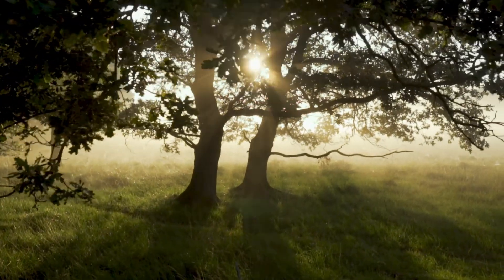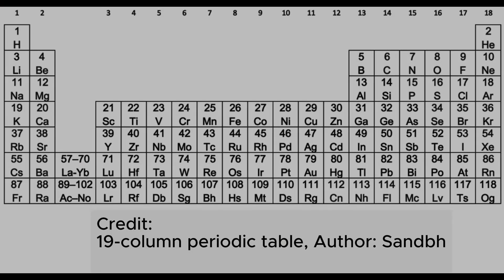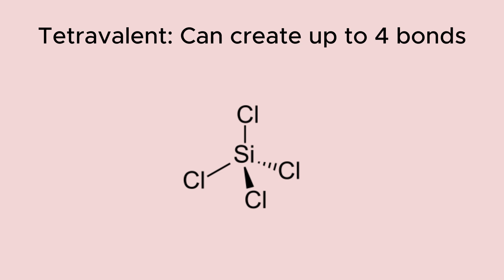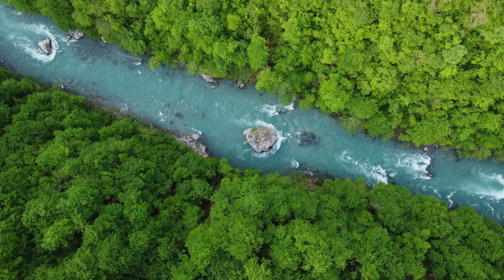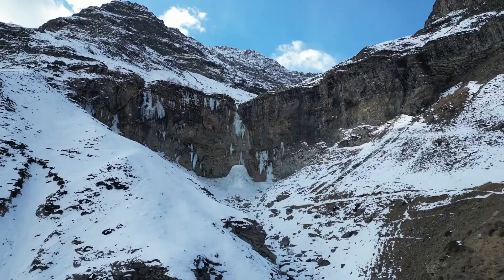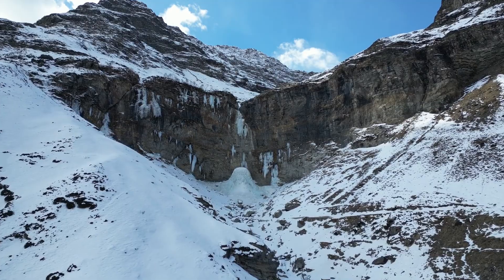Silicon has for decades been considered a serious alternative to carbon for life. One of the main reasons is that silicon belongs to the same group as carbon in the periodic table, and therefore they share several properties. One of the most important is that it is tetravalent, meaning each silicon atom can create up to four bonds to other molecules. This should allow silicon to create the complex molecules needed for life, just like carbon.